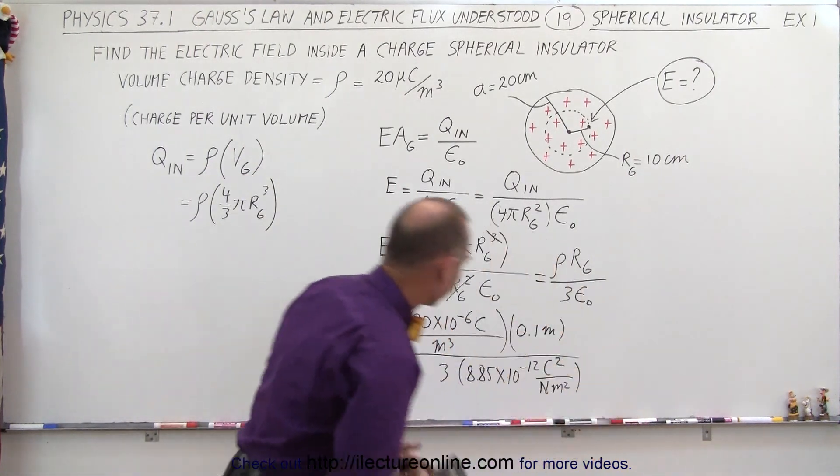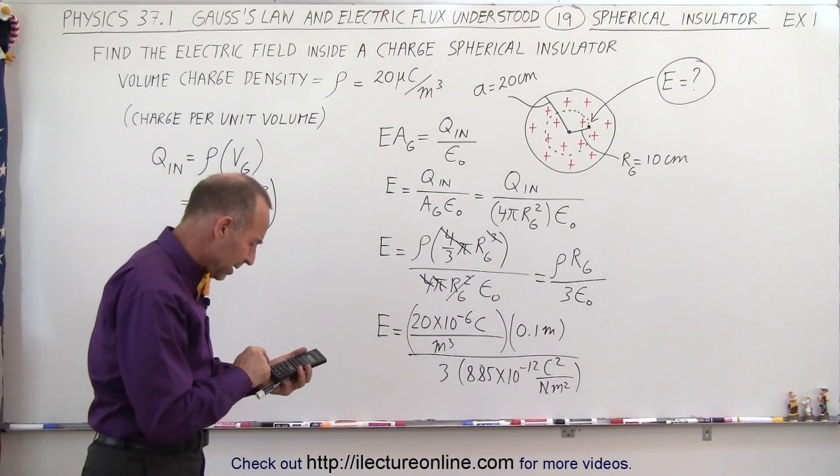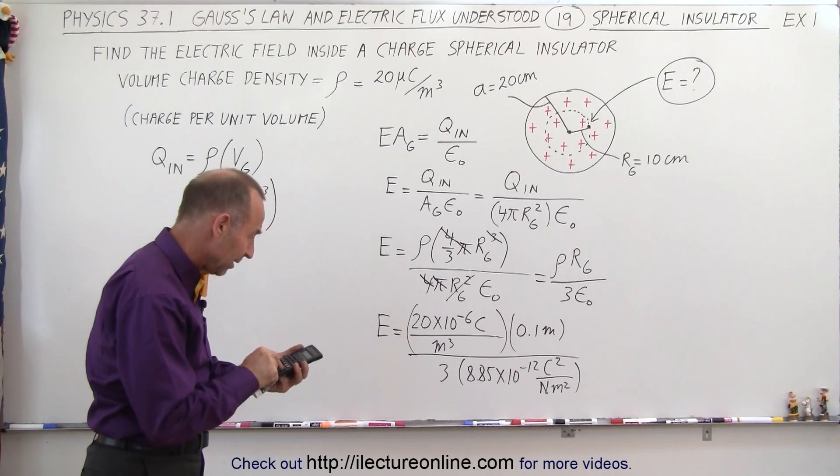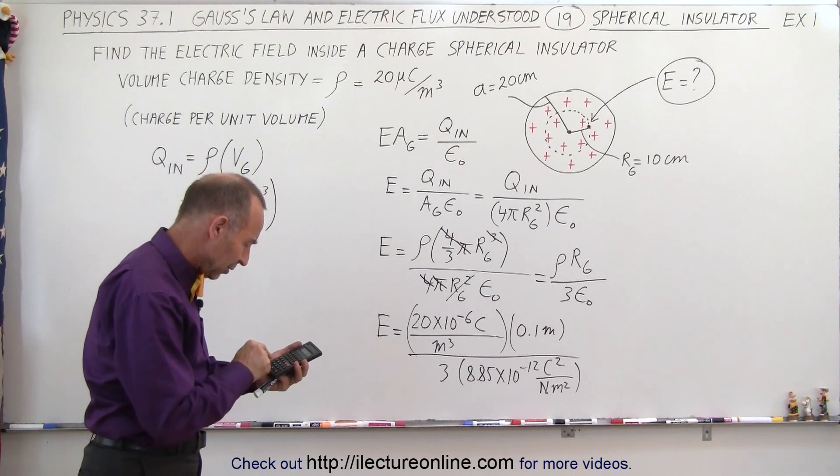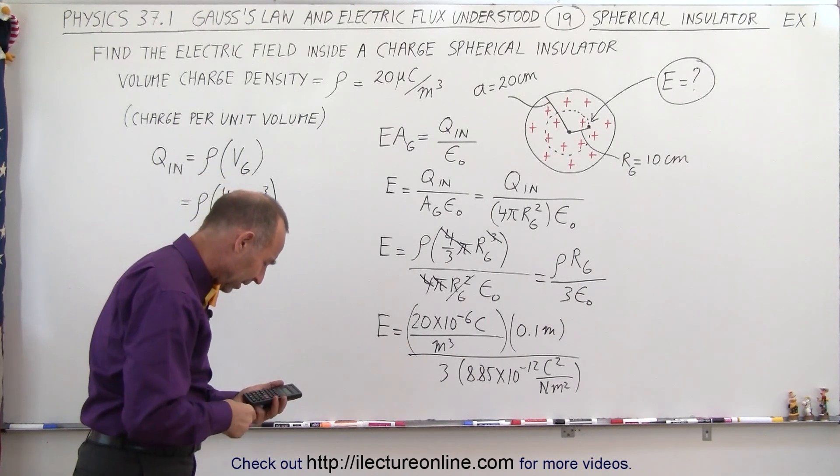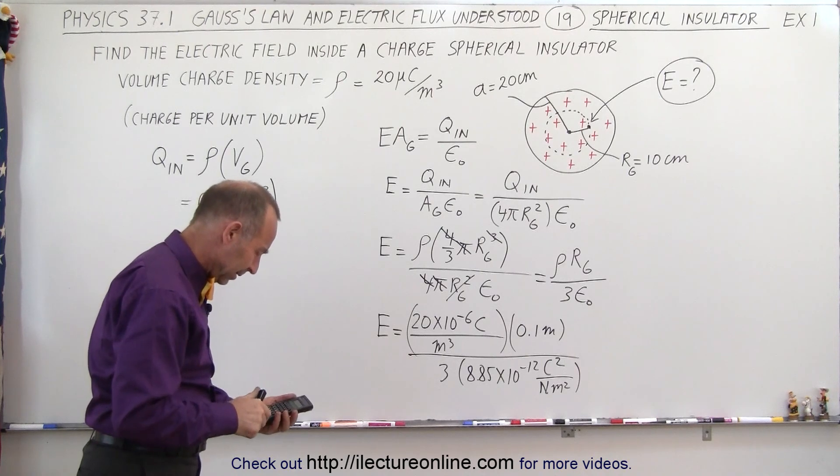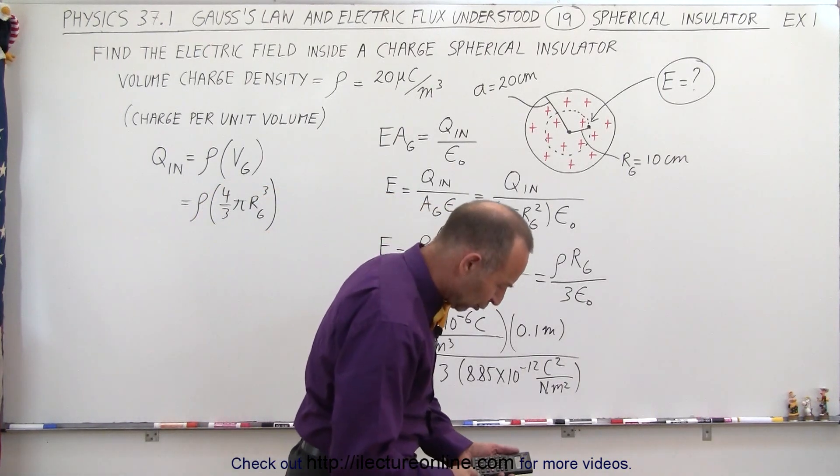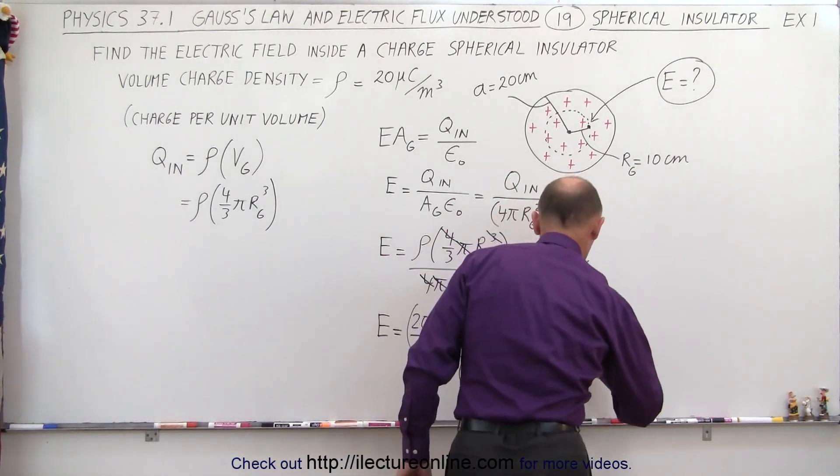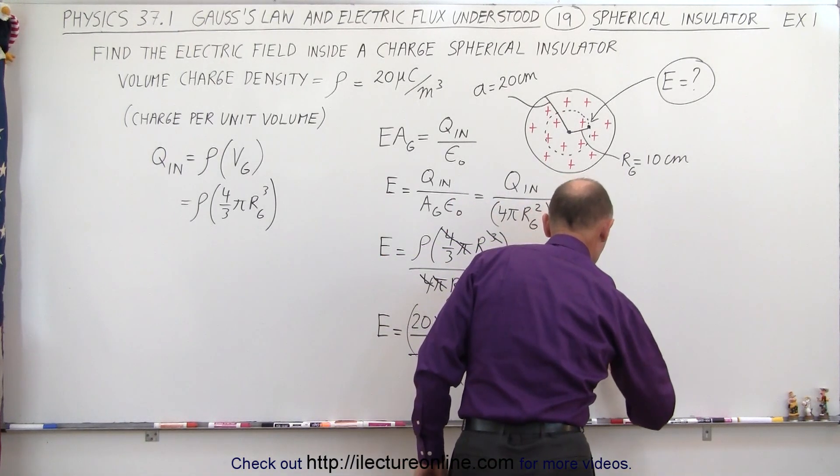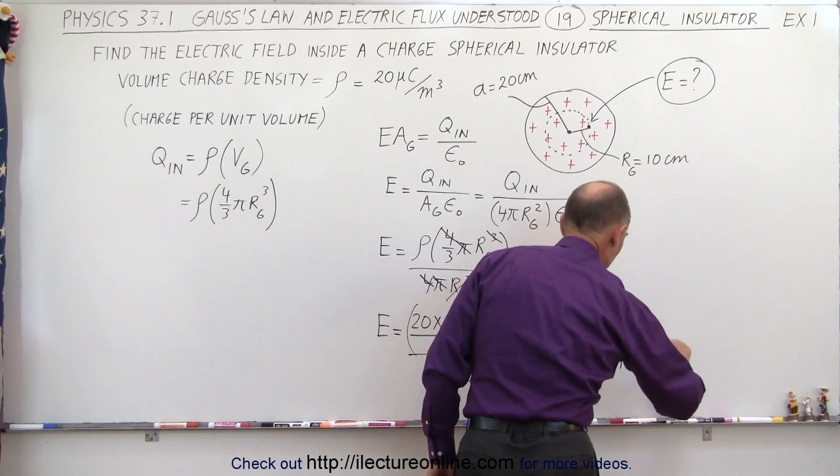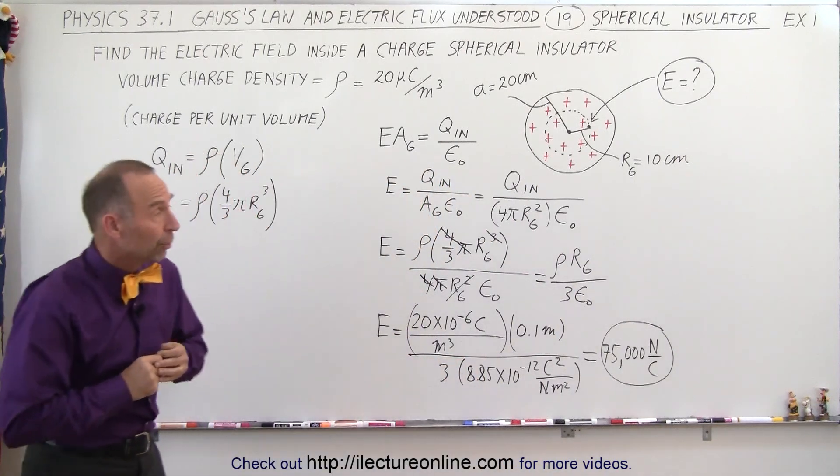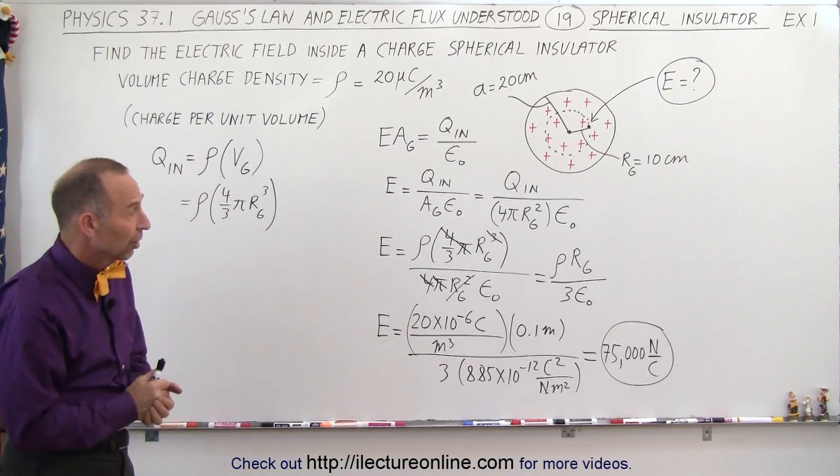Now we need a calculator. So we have 20 e to the minus 6 times 0.1 divided by 3 and divided by 8.85 e to the minus 12. So that ends up with 7.5 times 10 to the 4th newtons per coulomb. That would be about 75,000 newtons per coulomb as the electric field strength at the halfway point between the center and the edge of that sphere.